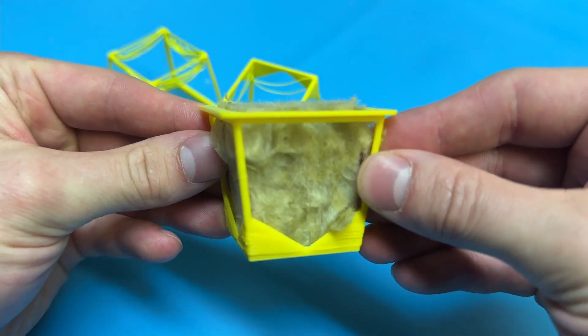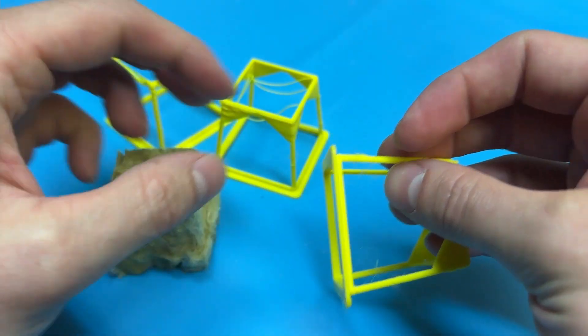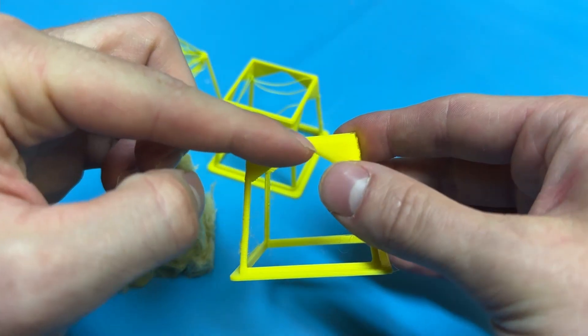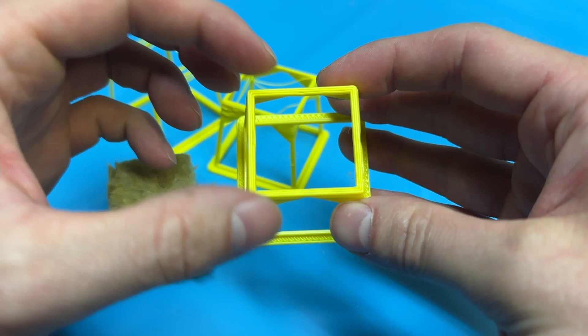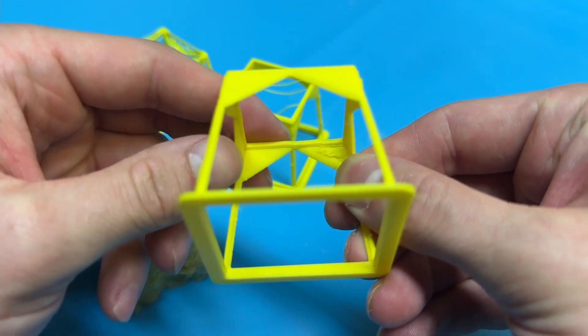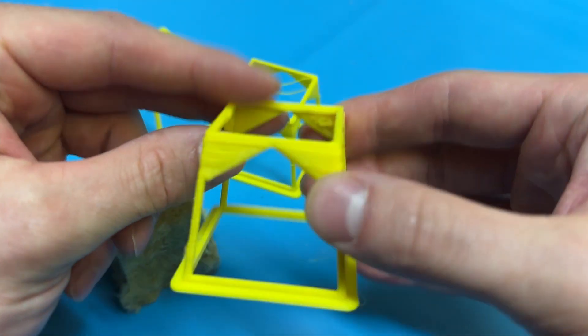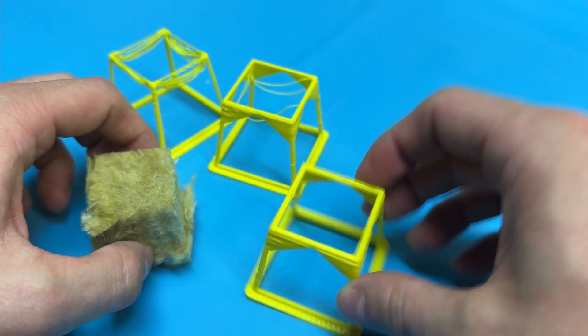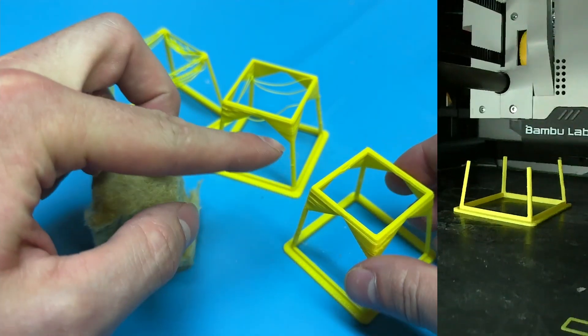That leads us to this third design. So on this one I had the chamfers on the side that meet in the middle, but then I also added a chamfer on this back edge to support that inset, which means that this can print entirely without supports in this orientation.